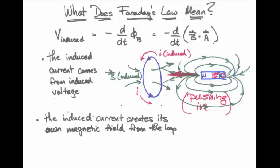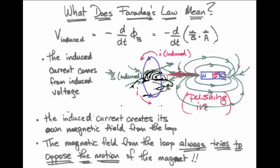Remember that the current flowing in the loop will also result in a magnetic field produced by the loop. So in addition to an induced current, there is going to be an induced magnetic field from that current, because every current produces its own magnetic field. This particular magnetic field points in a direction so as to oppose the motion of you pushing that bar magnet in.